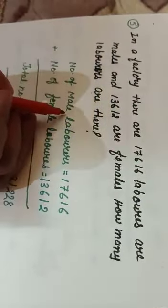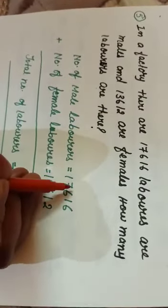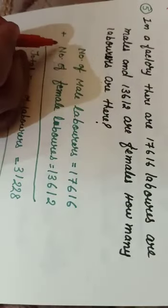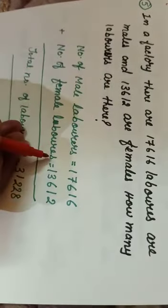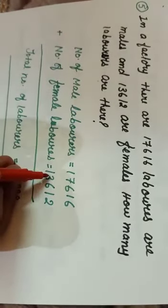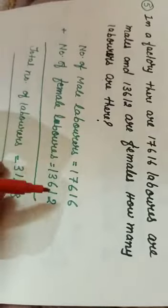For this, we will write number of male laborers is 17616. Then after that we will write number of female laborers is 13612. And for total laborers, we will add it.